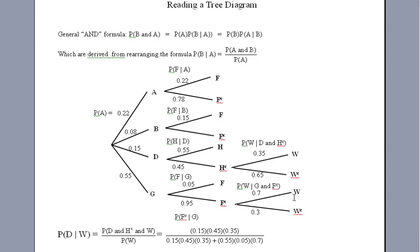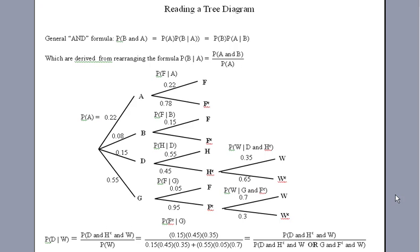Notice again how this formula works. The probability of W is the probability of going down this path or this other path, both ending in W, which is what we want. Calculate this and again we have our probability.